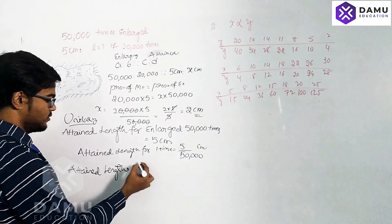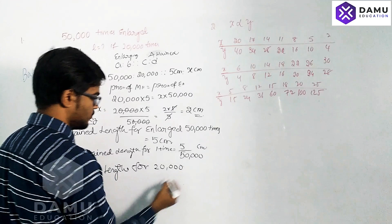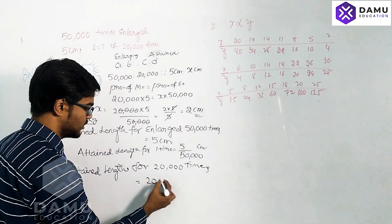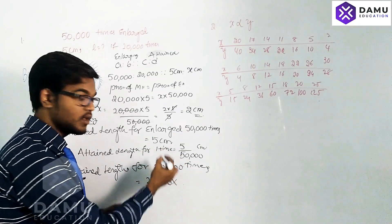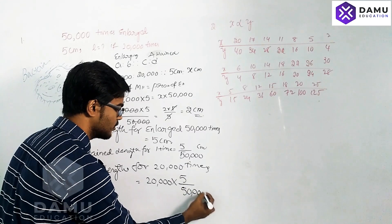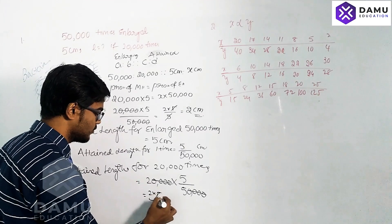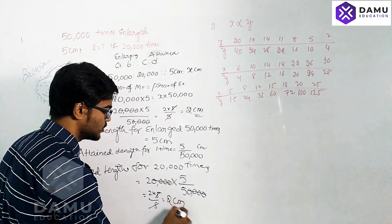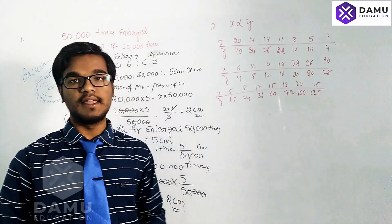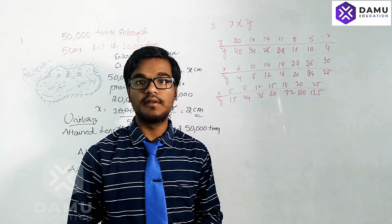The attained length for 20,000 times will be 20,000 multiplied by 5 divided by 50,000. The four zeros cancel, giving 2 into 5 divided by 5, which also equals 2 centimeters. We get 2 centimeters by both methods.